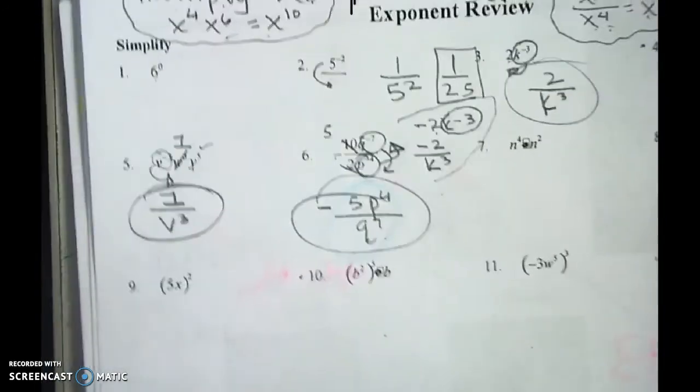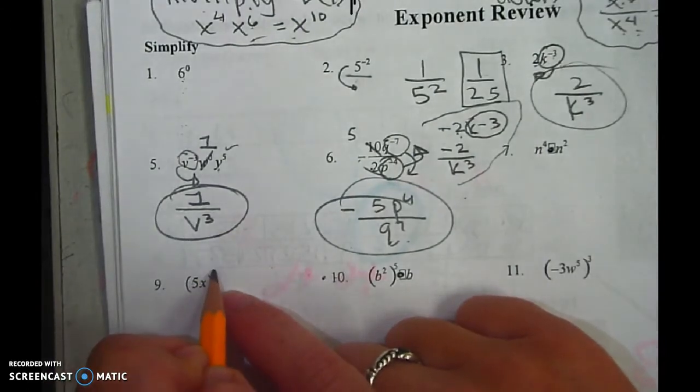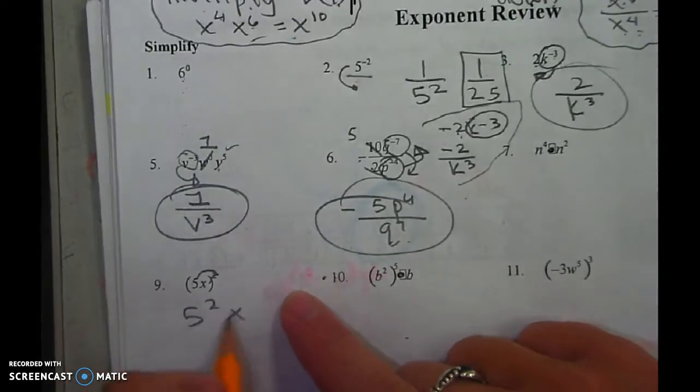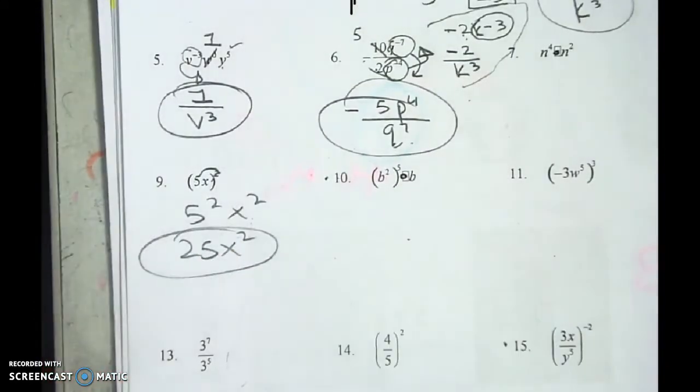You can do those, those are just multiplying. But here's the thing. I have two things. I have to give the squared to the 5 and the squared to the x. So it's 5 squared x squared, which is 25x squared. Done.